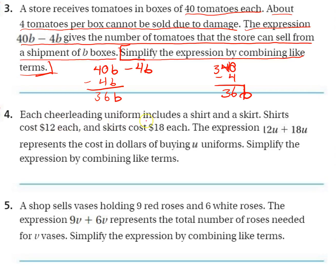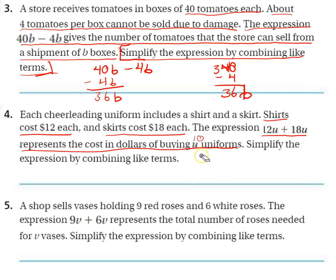Number four: each cheerleader uniform includes a shirt and a skirt. Shirts cost $12 each, skirts cost $18 each. The expression 12U plus 18U represents the cost in dollars of buying however many uniforms you want. That's why they use a variable — you could have a team of 10 or 15, but it doesn't matter. Whatever you have, you can use this expression and plug in those numbers to see the cost. We need to simplify the expression by combining like terms. Here are my terms: 12U and 18U.